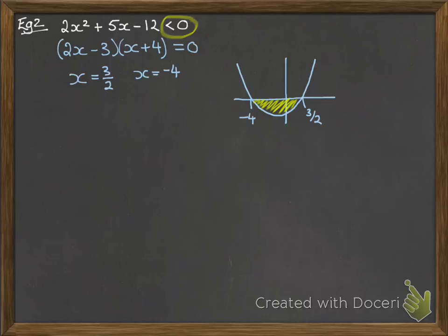Now since this is one region, it's not two separate ones, we can actually write this one together. So minus 4 is less than x, which is less than 3 over 2.